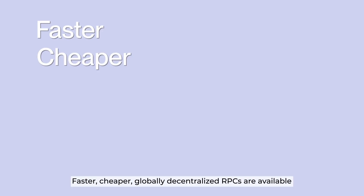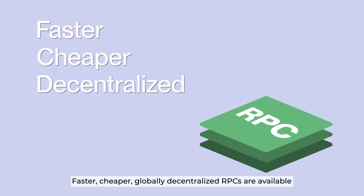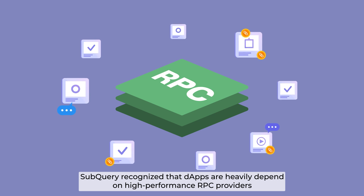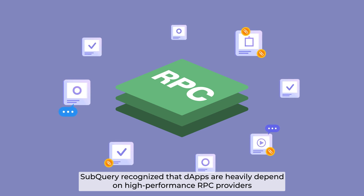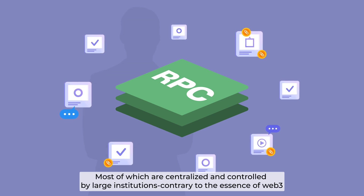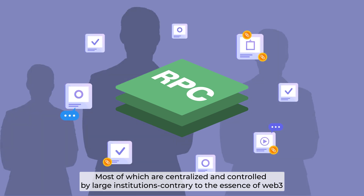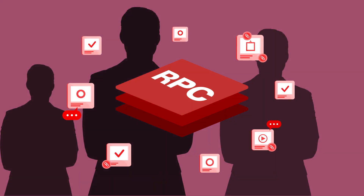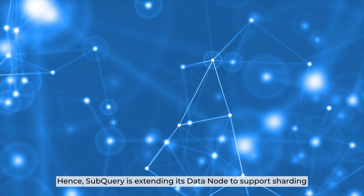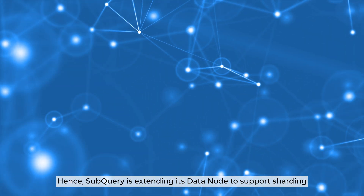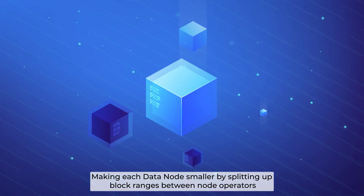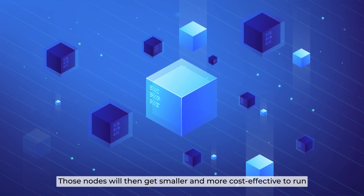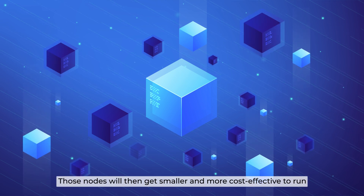Faster, cheaper, globally decentralized RPCs are available. Subquery recognizes that dApps are heavily dependent on high-performance RPC providers, most of which are centralized and controlled by large institutions, contrary to the essence of Web3. Hence, Subquery is extending its data node to support sharding, making each data node smaller by splitting up block ranges between node operators. Those nodes will then get smaller and more cost-effective to run.